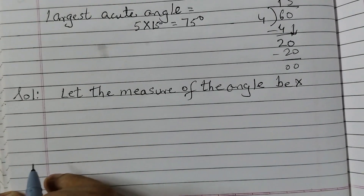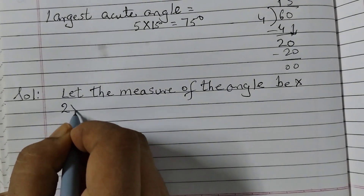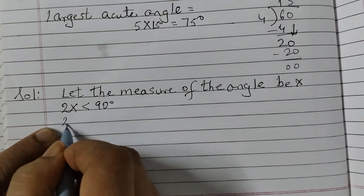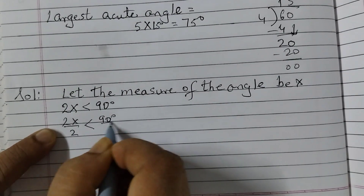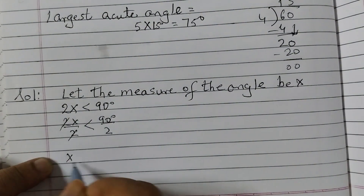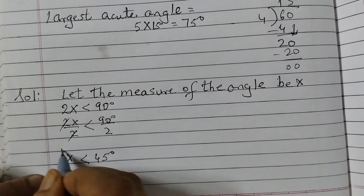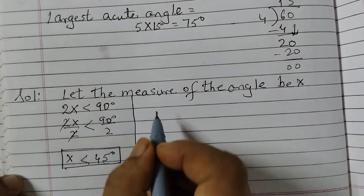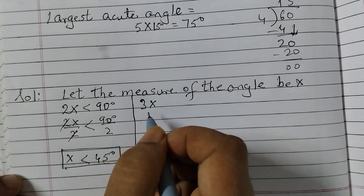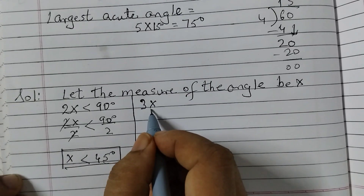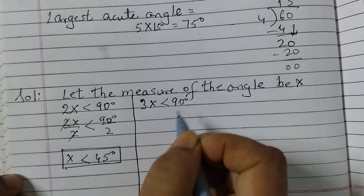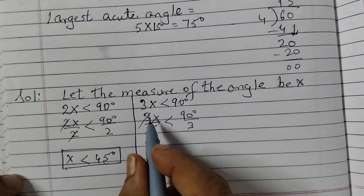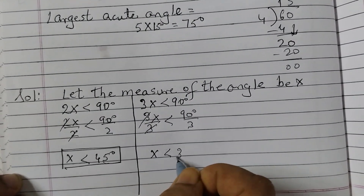Let the measure of the angle be x. The first condition: if you double the measure, 2x < 90 degrees. Dividing both sides by 2, the 2s cancel and x < 45 degrees. This is the first condition — the angle is less than 45 degrees. The second condition: tripling gives 3x < 90 degrees. Dividing both sides by 3, we get x < 30 degrees.